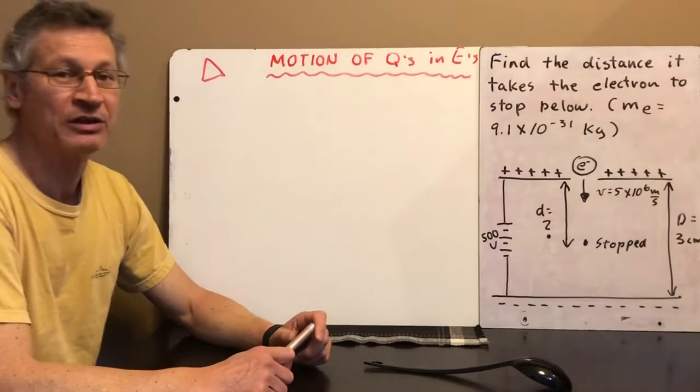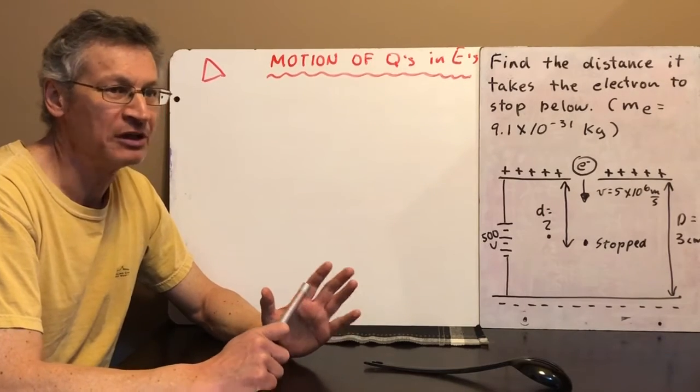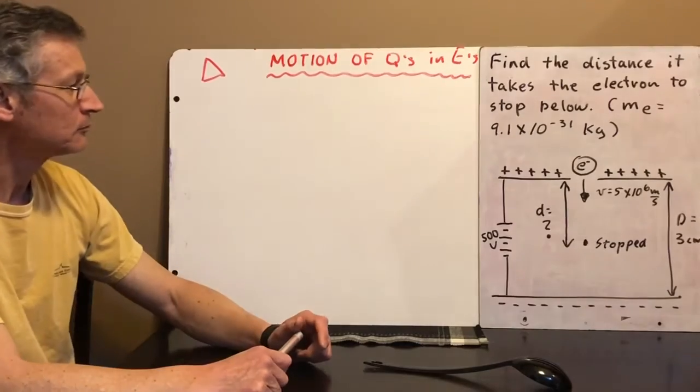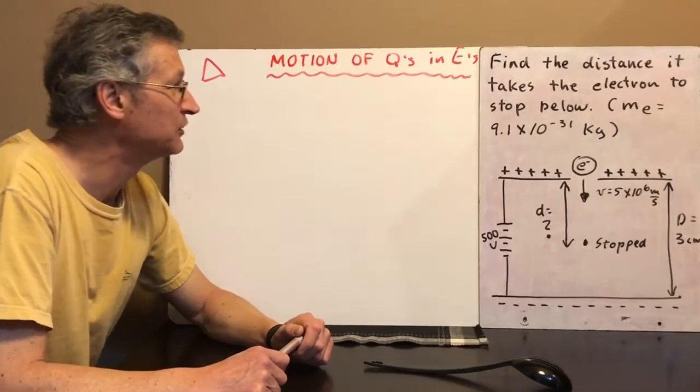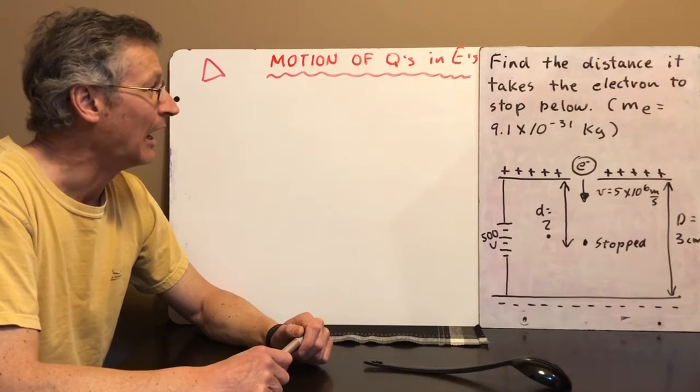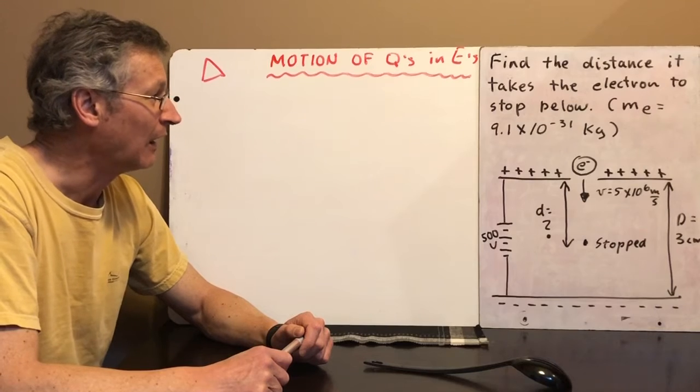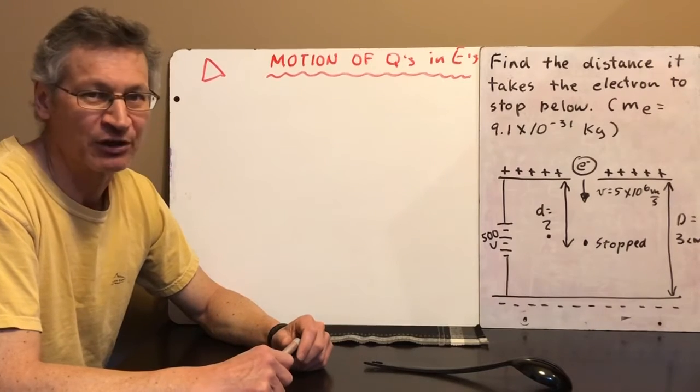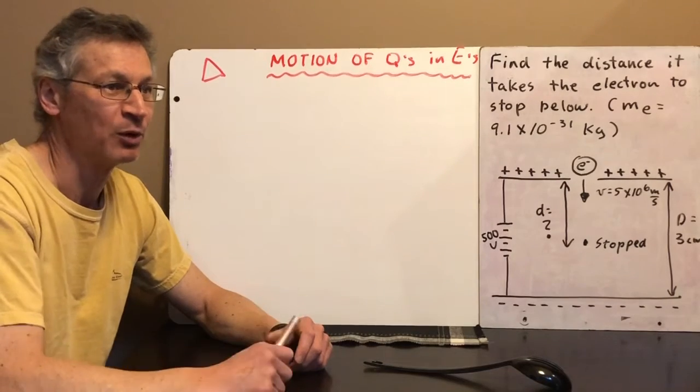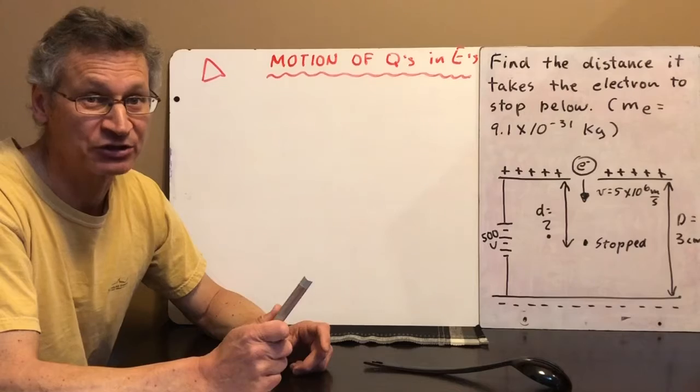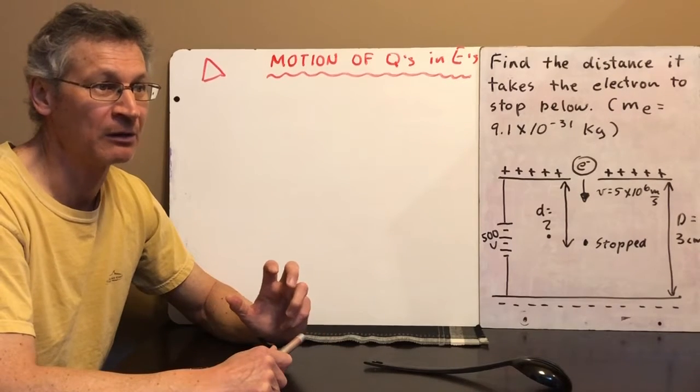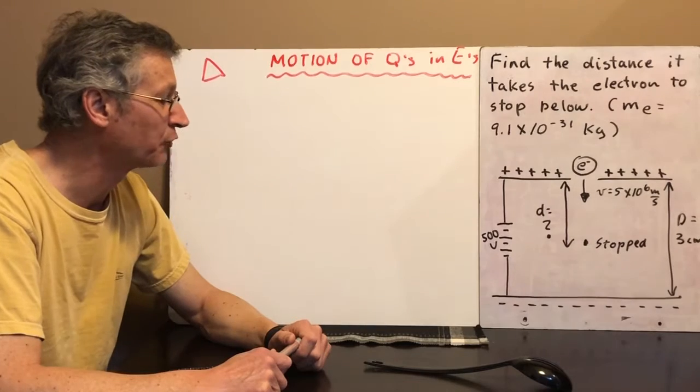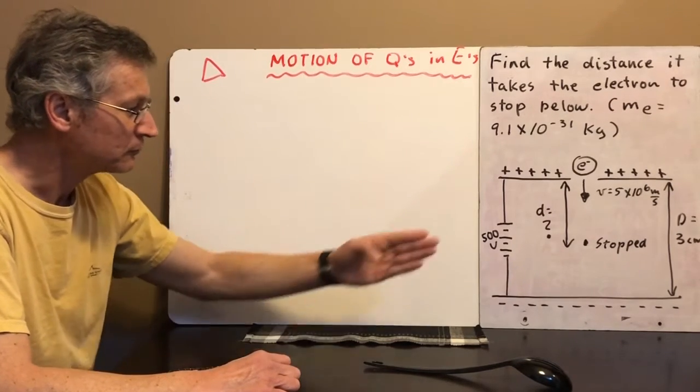Regardless, we are going to jump right into an example today. To be perfectly honest, absolutely nothing new here today, it's just a question of putting together some things that you already know. So if you look over there, there's the example we're going to take a look at, it says find the distance it takes the electron to stop below and the mass of the electron that's given to us and that's something you can Google or look up.